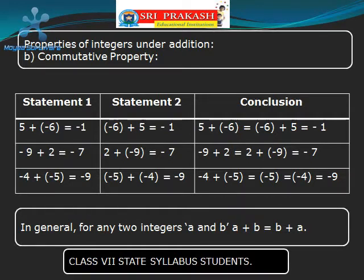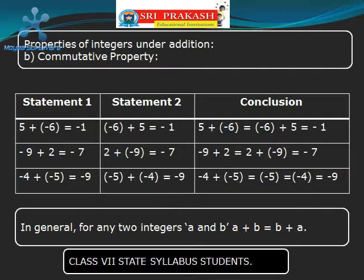Now let us take two negative numbers, minus 4 and minus 5, and add them. The result will be minus 9. Now let us interchange the numbers: take minus 5 first and then minus 4. When we add, we get minus 9. That means though we interchange minus 4 and minus 5 and add, the result is one and the same. So in general, for any integers A and B, A plus B is equal to B plus A.